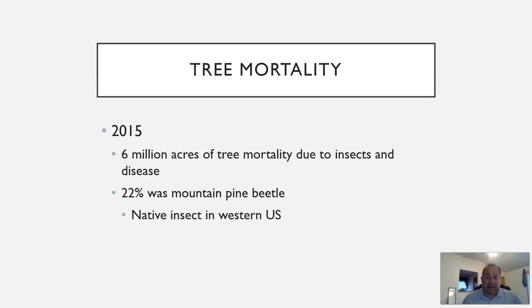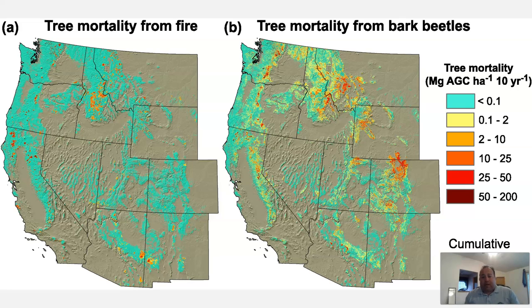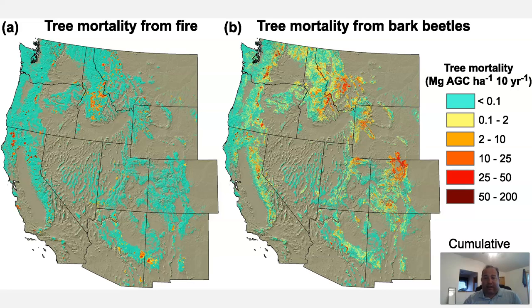The problem is that with climate change, and with a lack of fire in some of these areas, the mountain pine beetle isn't disappearing in the numbers that it should be. Instead, it's multiplying in much greater numbers. Looking at the western United States, you can see tree mortality from fire on the left and from bark beetles on the right — there's much more intensity from bark beetles. Especially in the Sierra Nevada, drought has stressed the trees and brought in bark beetles, leading to a lot of tree mortality.